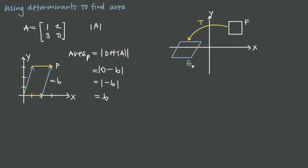We start with F, it undergoes transformation T, and turns into G. To find the area of G, all we need is the area of F and the transformation matrix representing T. We don't need to know exactly where G ends up, its dimensions, or even its exact shape — whether it became a rectangle, parallelogram, or stayed a square. As long as we have the area of F and transformation T, we can find the area of G.